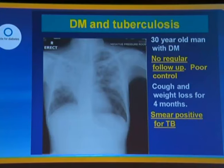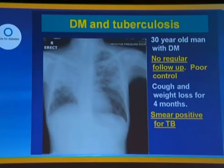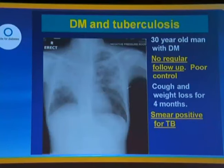So that's the general overview. Moving on now to look at tuberculosis in a bit more detail. This is a case which would probably be familiar to many of the clinicians in the audience: a 30-year-old man with poorly controlled diabetes, no regular follow-up, poor control, severe hyperglycemia, presenting with a cough and weight loss for four months, with a chest X-ray and smear positive for tuberculosis. A familiar scenario.